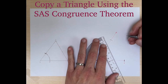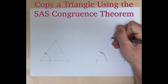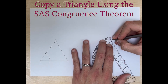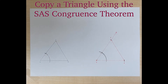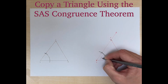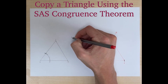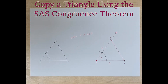Now we can put a point right here at this intersection and call it point F. Then we're going to draw our last side from point F to point E. We've created a congruent triangle by the side angle side congruence theorem because we measured this side, constructed this angle, and measured that side. So by definition, triangle ABC is congruent to triangle DEF. That is how you copy a triangle using the side angle side congruence theorem.